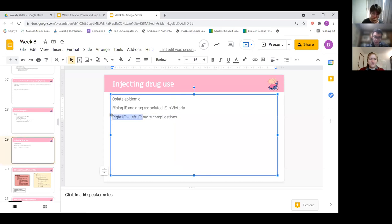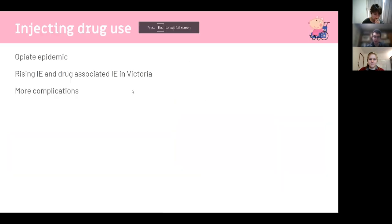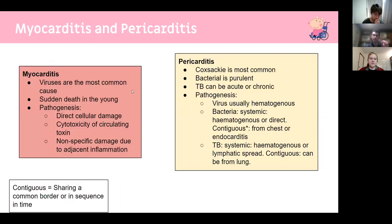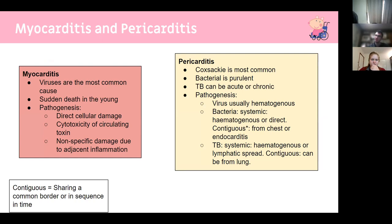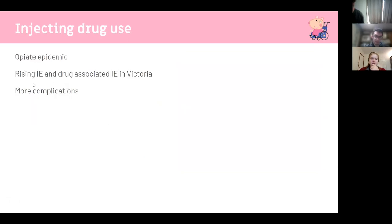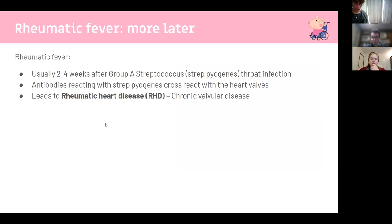To clarify the valve complications: mitral and aortic valves are most commonly affected overall, but regarding complications, the right side can actually develop larger clots because venous pressure is much lower, making it easier for bacteria to colonize. Arterial pressure in the left side is the highest in the body, making vegetation formation harder there, so right-sided complications involving large clots can be particularly significant.